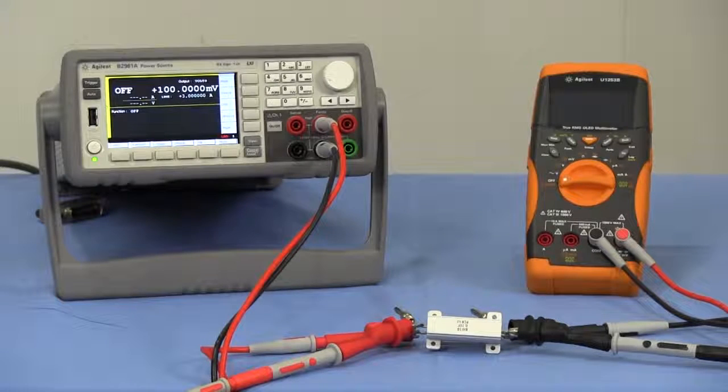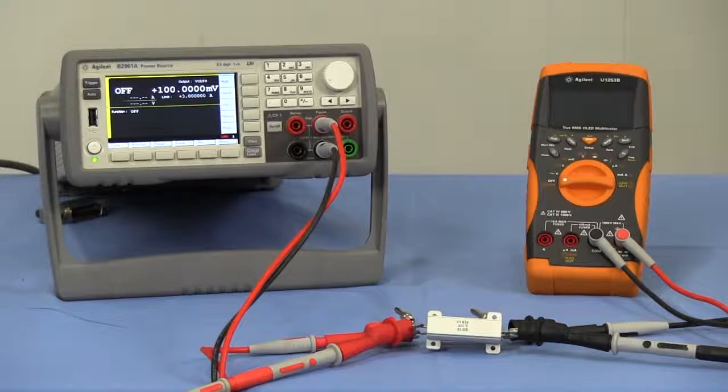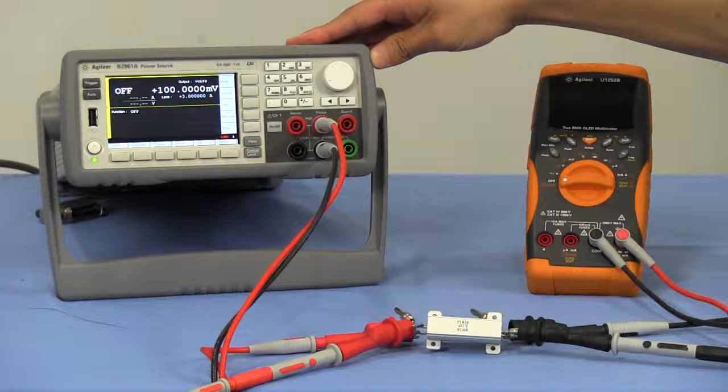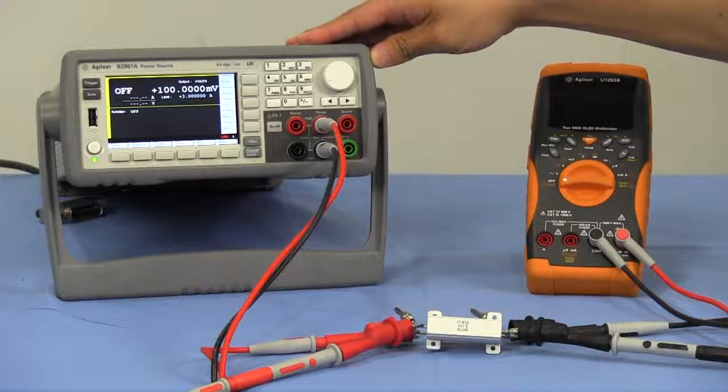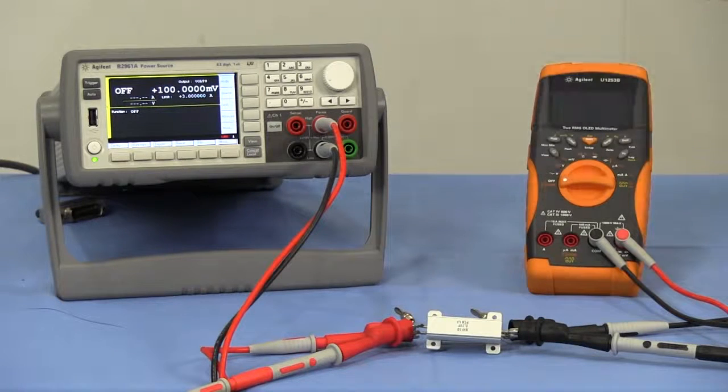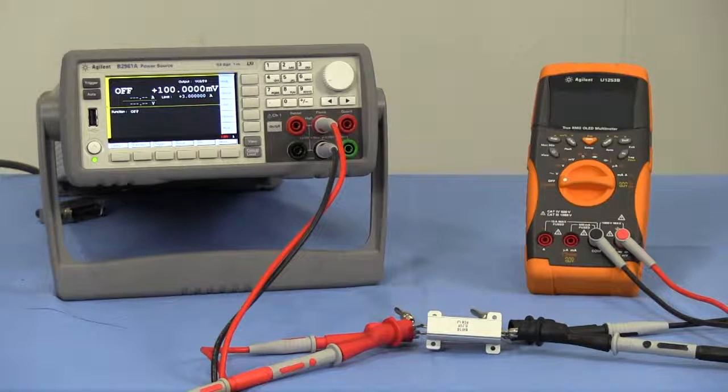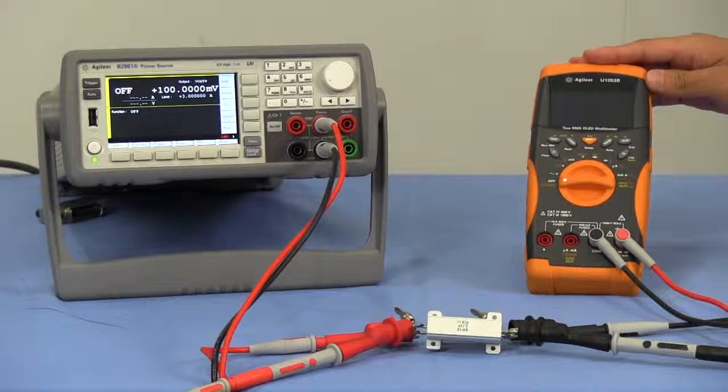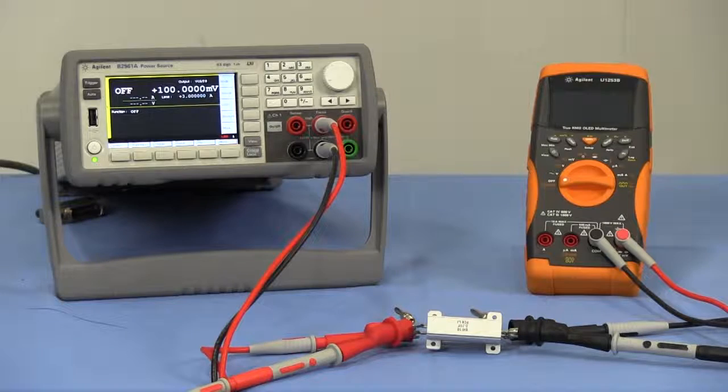I'll show you the advantage of remote sensing using these instruments. This power supply is Agilent B2961A 6.5 digital low-noise power source. This power supply has remote sensing. And this multimeter is Agilent U1253B. I'll use this multimeter as voltmeter to confirm the applied voltage.